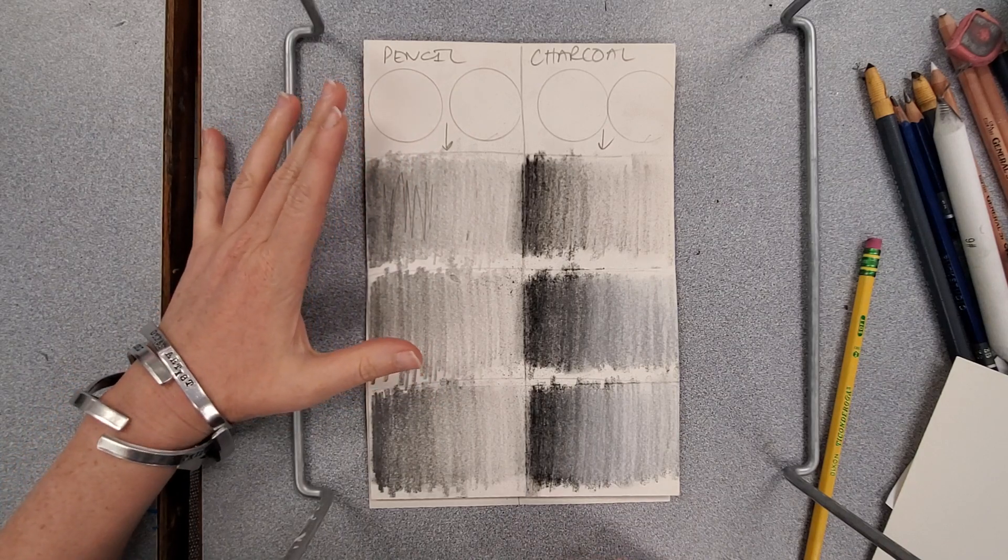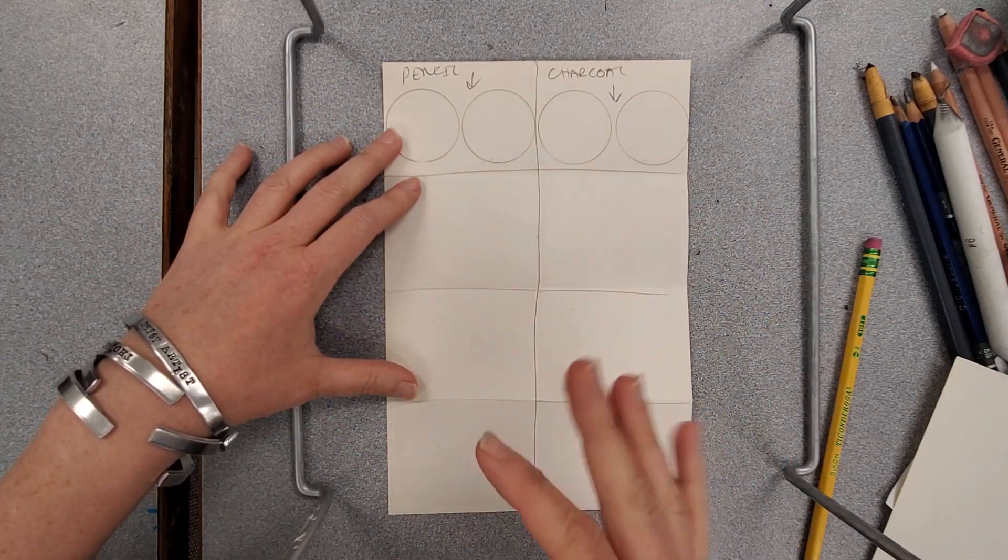Alright everyone, for our warm-up today we're going to practice with graphite or pencil and then experiment with charcoal. I'm going to walk you through the pencil first and then probably do a second video on the charcoal. You should have your warm-up paper set up like this. We're going to use always back and front, starting on the left hand column first for all of our pencil techniques. I'm going to skip over the circles for now, we'll come back to those later, but we are going to work in these left hand sections right here.